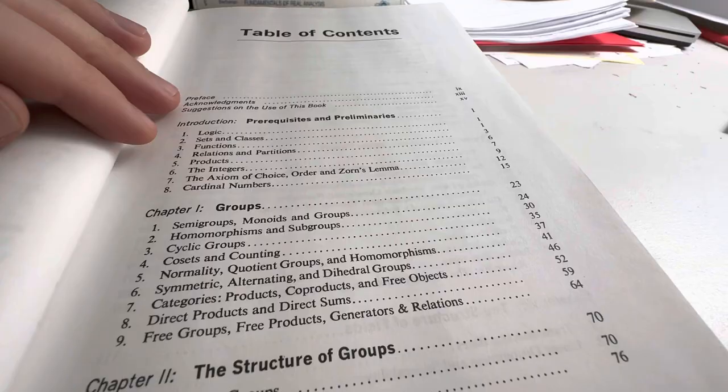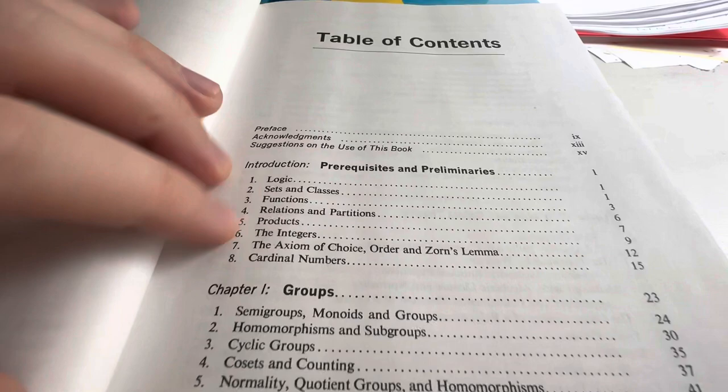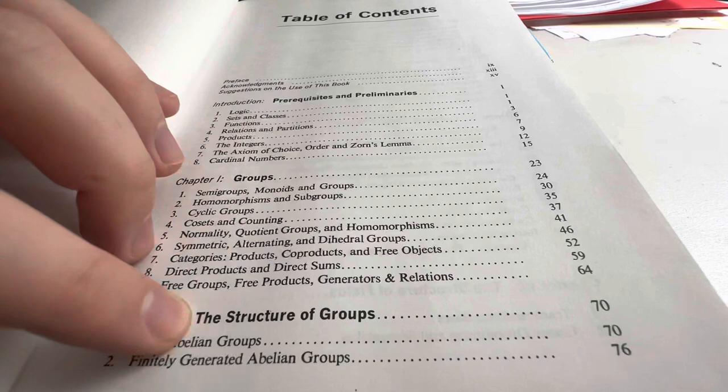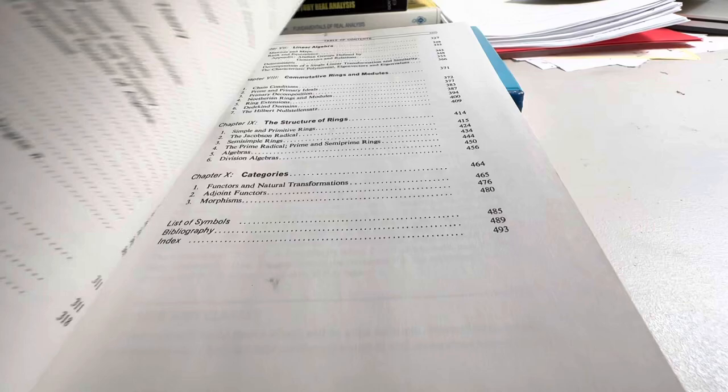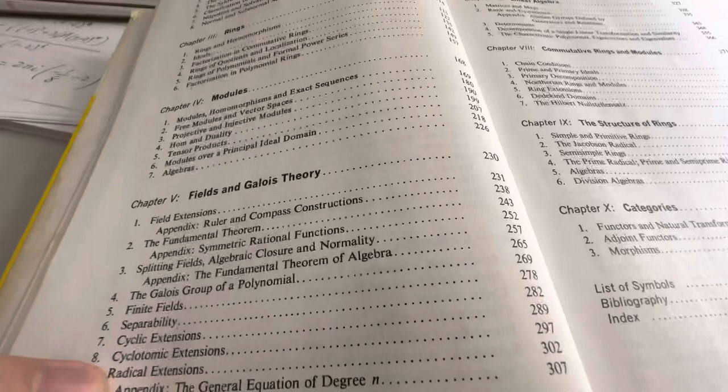And you can see already they start with the prerequisites and preliminaries. All the basic stuff that you should know. And then we start with groups and the structure of groups. That, to me, makes sense that they would start with groups. And then what else? We have Rings, Modules, Fields, and Galois Theory. Okay, so Chapter 3 is about rings. That's fine.